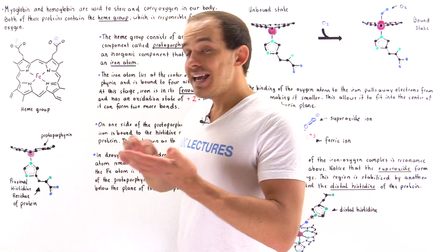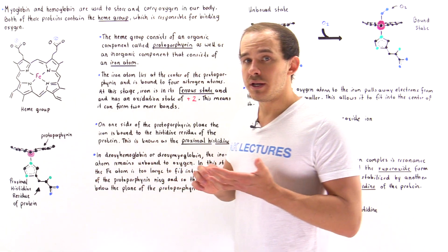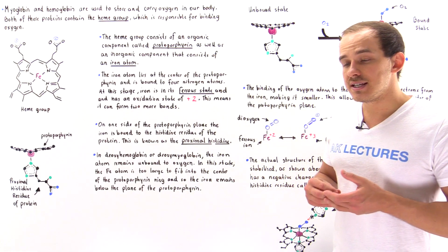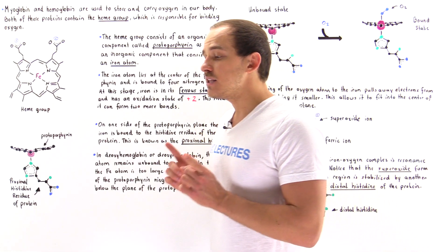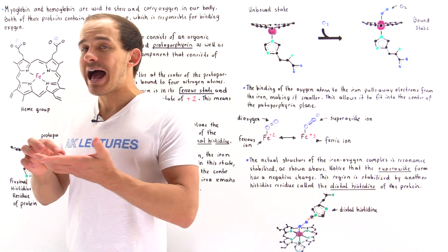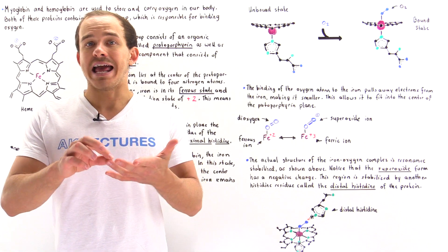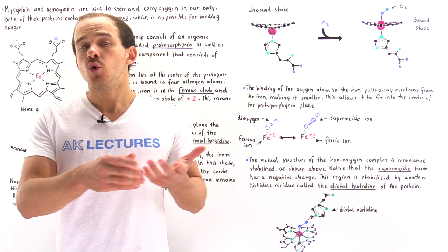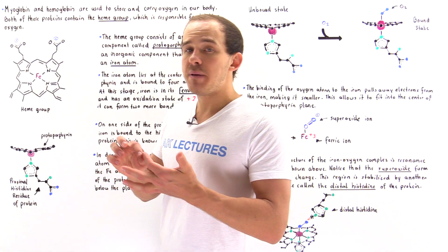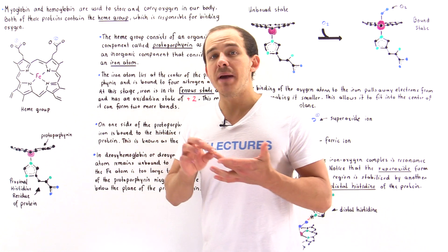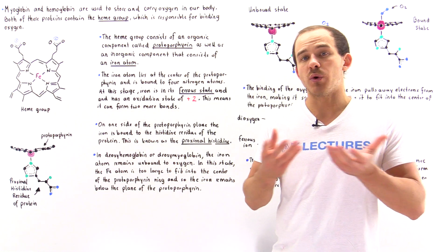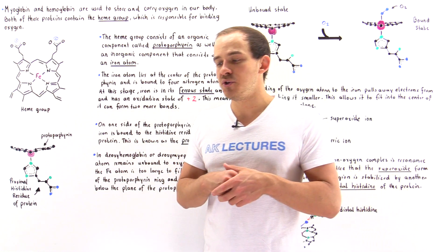On the other hand, hemoglobin is a protein that consists of four individual polypeptide chains. We have alpha-1 and alpha-2, which are two identical alpha chains, and we have beta-1 and beta-2 subunits, which are also identical subunits.